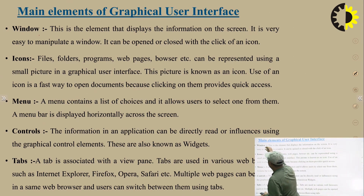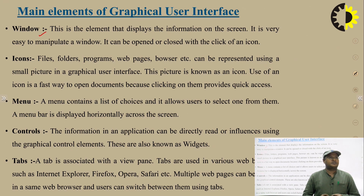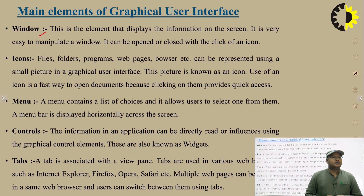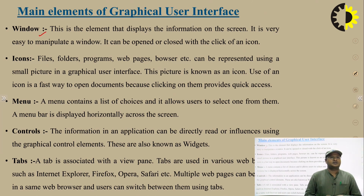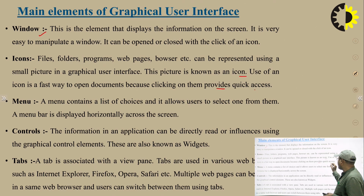Window: this is the element that displays information on the screen. For example, when using a website, entering the URL opens the home page — that is the window of the home page. A window can be opened or closed with the click of an icon. Icons: files, folders, programs, web pages, browsers, etc. can be represented by small pictures in a GUI. This picture is known as an icon. Using icons is a fast way to open documents because clicking on them provides quick access.